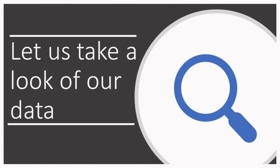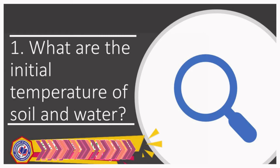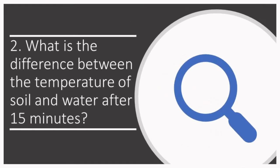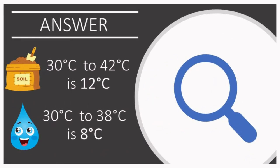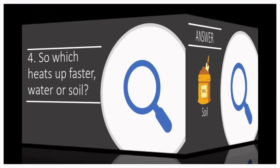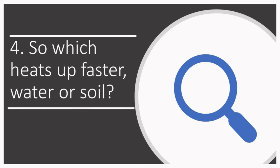Let's take a look at our data. What are the initial temperatures of soil and water? Both had the same initial temperature of 30 degrees Celsius. The difference in temperature for the soil — from 30 to 42 degrees Celsius — is 12 degrees Celsius, while the water went from 30 to 38 degrees Celsius, a difference of 8 degrees Celsius. Which has a higher temperature after 15 minutes? Based on the record, the answer is the soil. So the soil heats up faster.